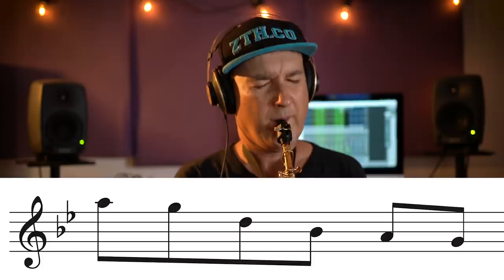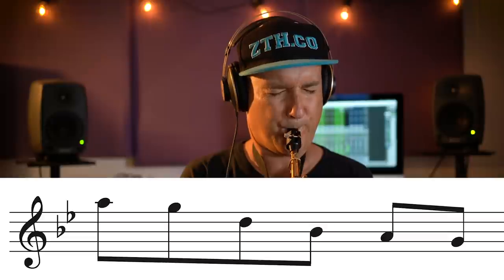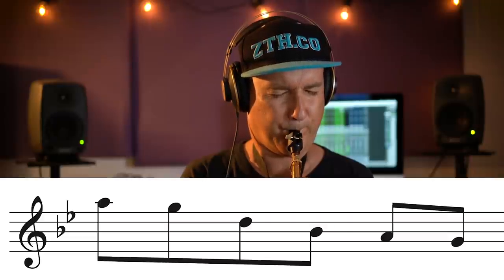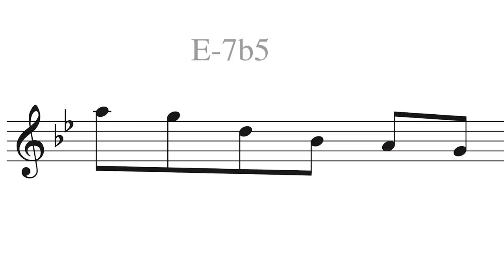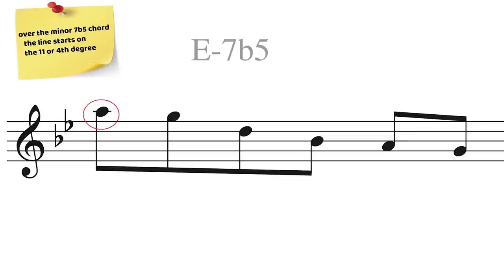On the tonic G minor chord, we can play the Cry Me A River lick starting on the 9th of G minor. As well, this same group of notes fits over E minor 7 flat 5, as A is the 4th or 11th of E minor 7 flat 5. Now let's listen to the Cry Me A River lick over all four chords, played a little squarely.